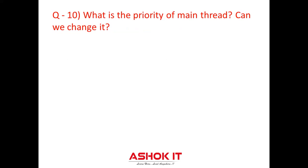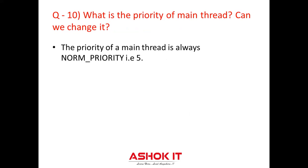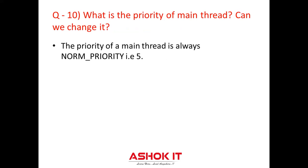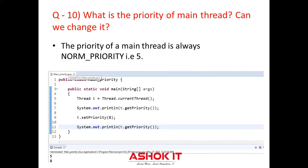Question ten: What is the priority of the main thread, and can we change it? The normal priority of the main thread is always NORM_PRIORITY, that is 5. Yes, if you want to change the priority of the main thread, you can use the setPriority method. Similarly, if you want to change the priority of other threads, you can use setPriority to change the priority of any thread.